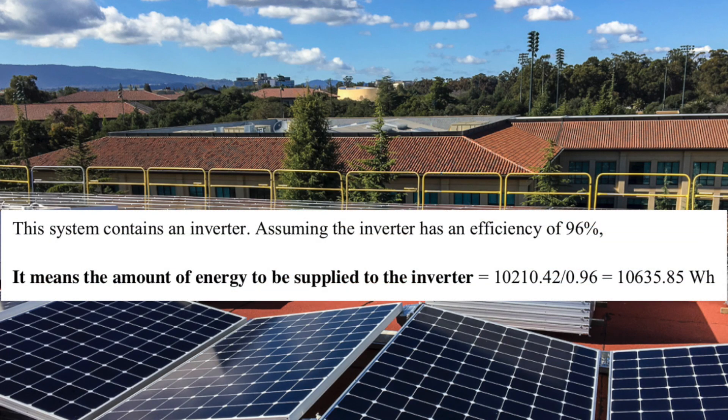Now that we have calculated the amount of energy we want from our system to give us two days autonomy and power our appliances in 10 hours, we can calculate the capacity of each component. Remember the inverter is connected directly to the electrical appliances, so going up from the electrical appliances to the solar panels, the next component is the inverter. We can assume our inverter has an efficiency of 96%. The storage autonomy value calculated was about 10,210.42 Wh, so we divide by 96% to get the capacity of the inverter, which is 10,210.42 Wh divided by 0.96.